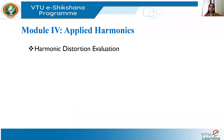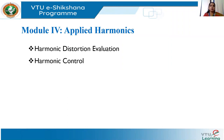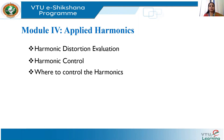Module 4 is Applied Harmonics. In this module, we are going to discuss the evaluation of harmonic distortion from both the utility side and the end user side. Then we will see the control of harmonics — there are mainly three ways: by reducing the harmonic current in the load, by filtering, and by modifying the frequency response. We will also cover where to control harmonics — whether on the utility side or the end user side.